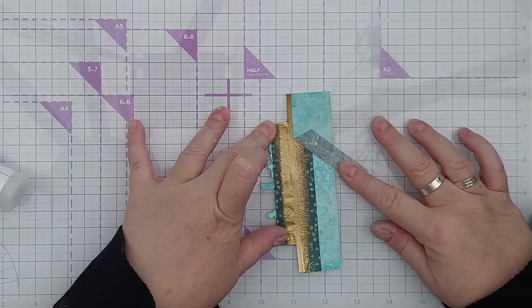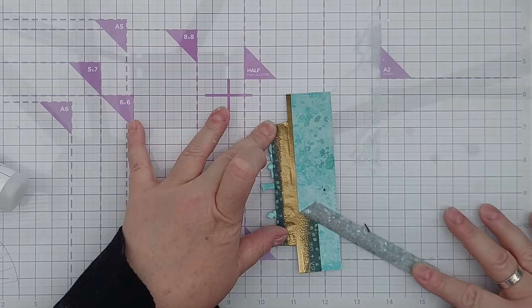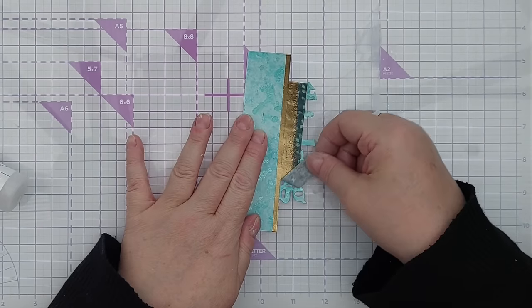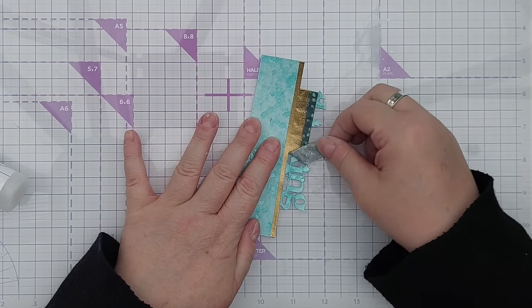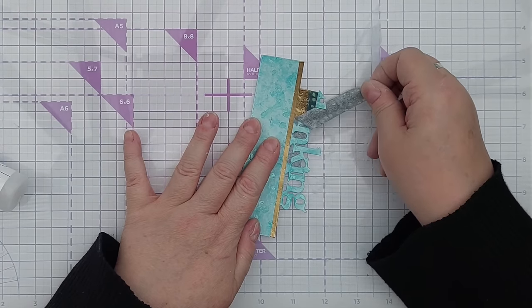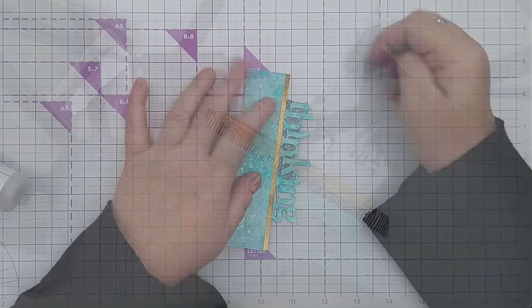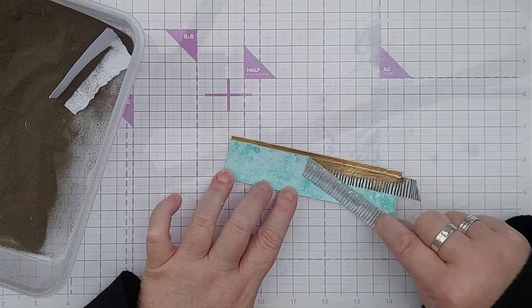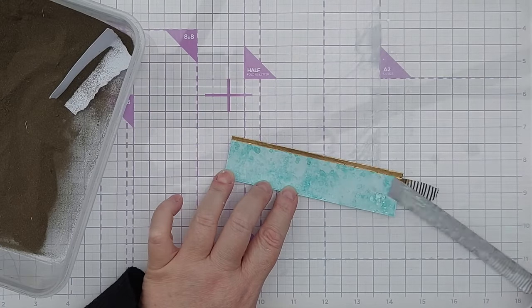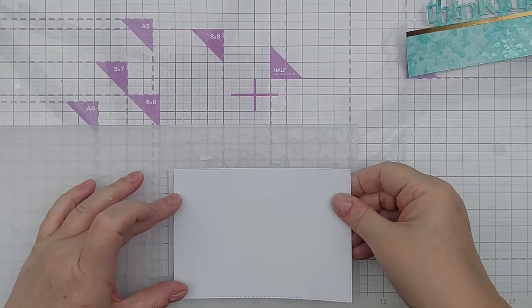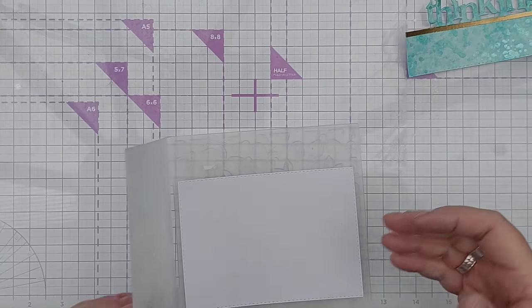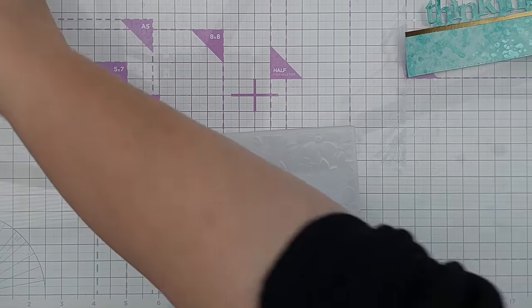If you haven't got an edgeable die like this you could just use a word die and attempt some partial die cutting, or you could just die cut your word and stick it onto a bit of card at the bottom. You could also die cut individual letters to make a word and stick those along at the bottom. My plan with this card was to have an aperture behind the thinking in between the two strips that I'd made.